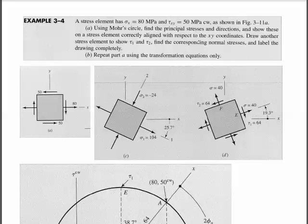Use Mohr's circle to find the principal stresses and directions and show these on stress elements correctly aligned with respect to the xy coordinates. Draw another stress element to show tau 1, tau 2, finding the corresponding normal stresses and label the drawing completely. Then repeat it using only the equations, and in a sense there's almost no difference between a and b. It's just a matter of whether you draw the circle or not.